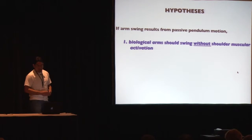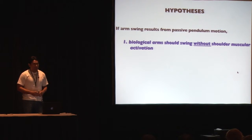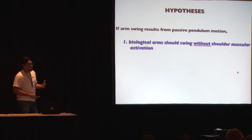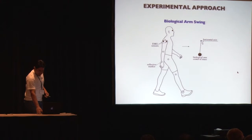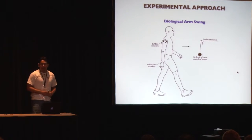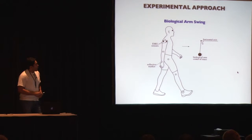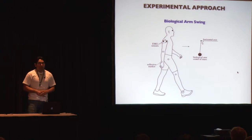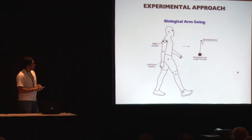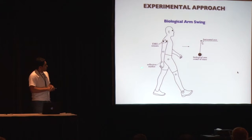We hypothesized that if arm swing results from passive pendulum motion, then the biological arms should swing without the need for shoulder muscular activation. We tested this first hypothesis by asking people to walk on a treadmill while we measured EMG activity in the anterior and posterior deltoid, and at the same time measured arm swing angles using reflective markers on the right arm as well as the leg.